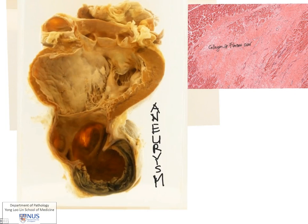We can see that this is a left ventricle. This time it is opened longitudinally, and right at the apex there is this very marked dilatation of the ventricular wall — this is a left ventricular aneurysm. We can even see that the rest of the ventricular wall in this particular area is thinned. So this is another example of a healed myocardial infarction giving rise to an aneurysm.